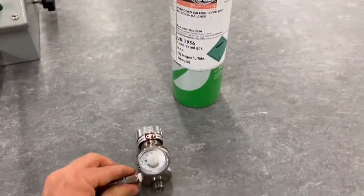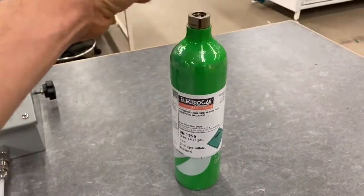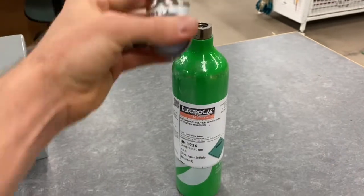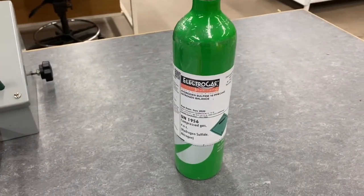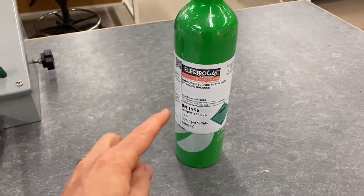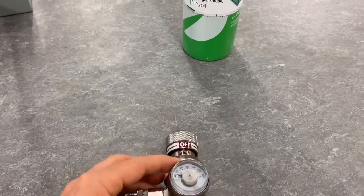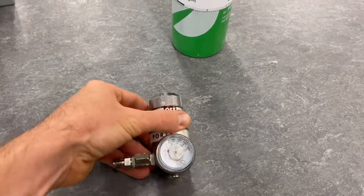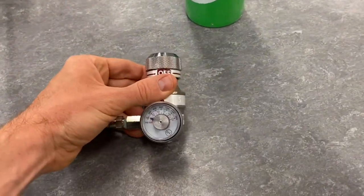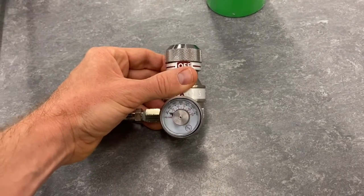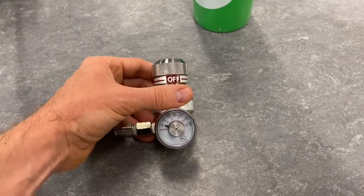Right here is the regulator we're going to be using. It screws onto the top of the bottle. These bottles can be compressed up to about 1,000 to 2,000 psi in the bottle. This is going to reduce the pressure down, and then we're just going to have a low flow rate. The manual says the flow rate we're supposed to use for the sensors, and that's something you're going to have to look up and find out what that value is.